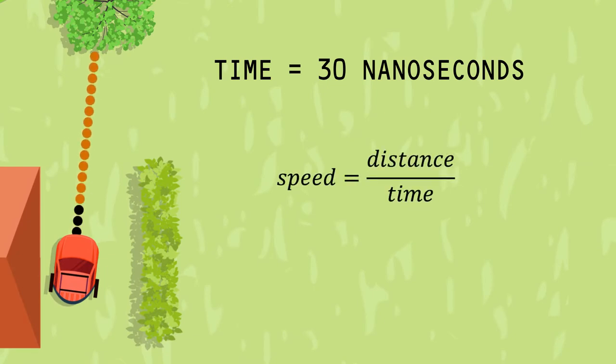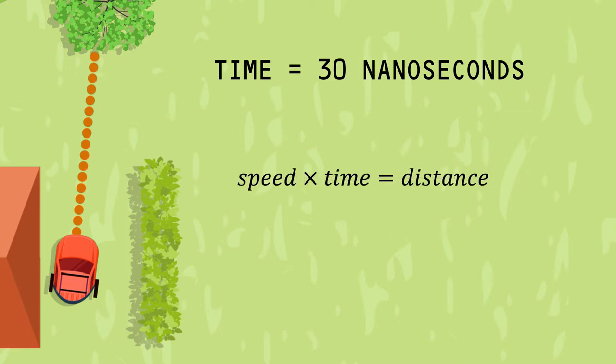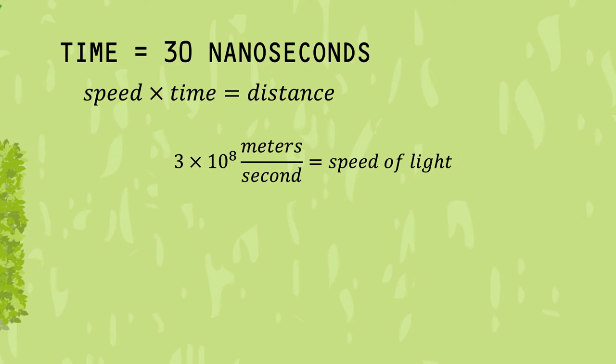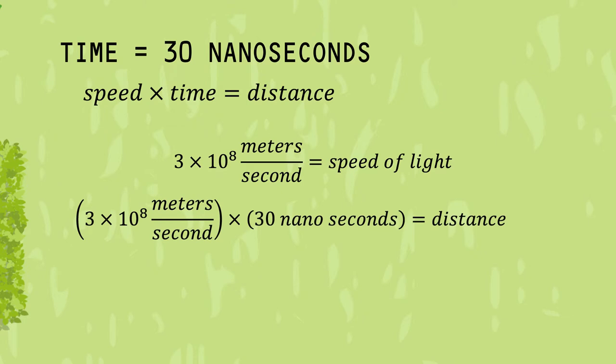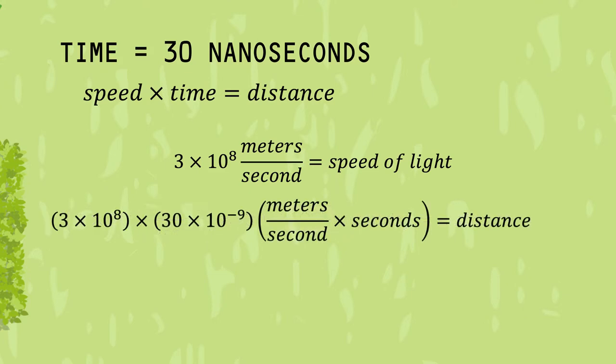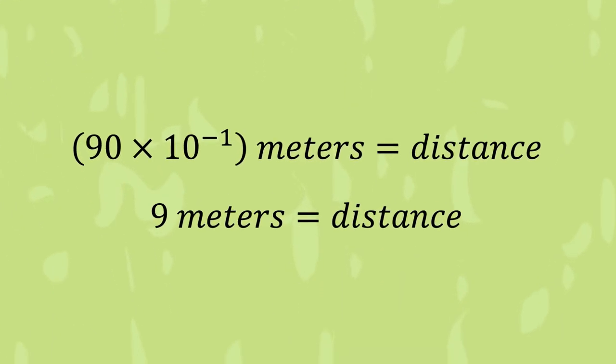We know that speed is equal to the distance divided by the time. We can rearrange this equation to show that distance is equal to speed multiplied by time. Since we know the speed of light is 3 times 10 to the 8th meters per second in air, and we were told that the time was 30 nanoseconds, we can multiply these two terms to get our distance. A nanosecond is 1 times 10 to the negative 9th power, and we can rearrange to get our units all together, and cancel out the seconds, then multiply the numbers, and simplify to get our total distance of 9 meters.